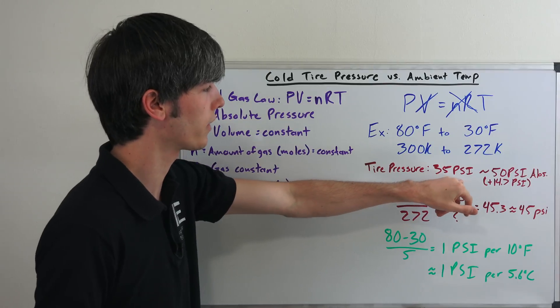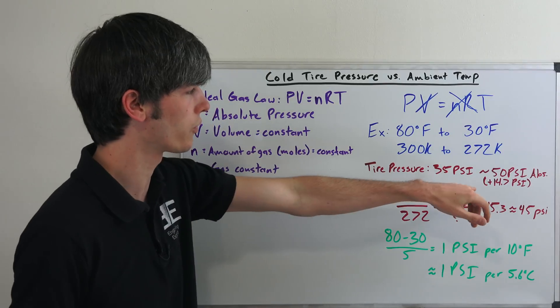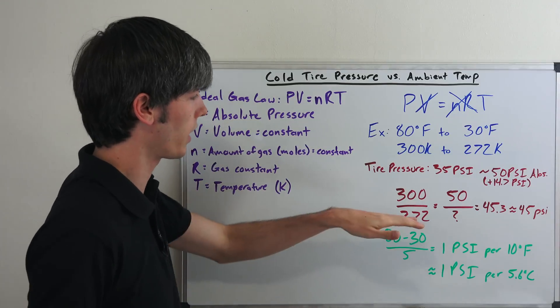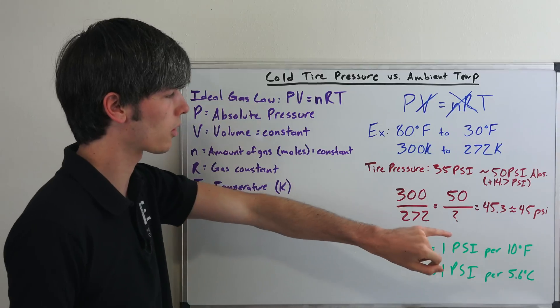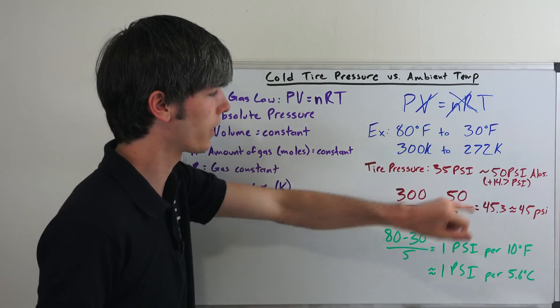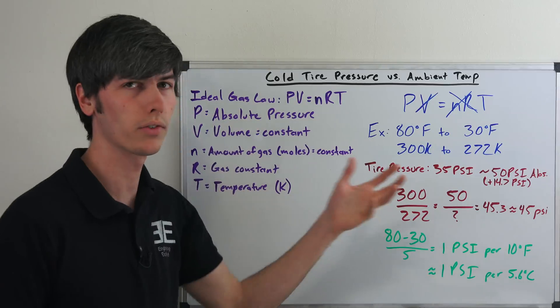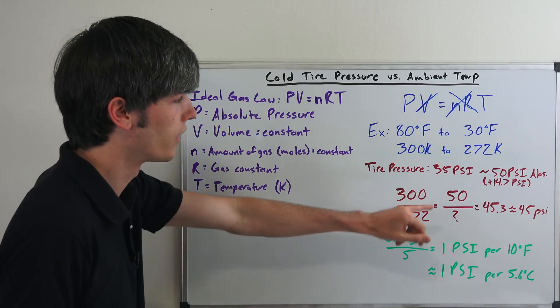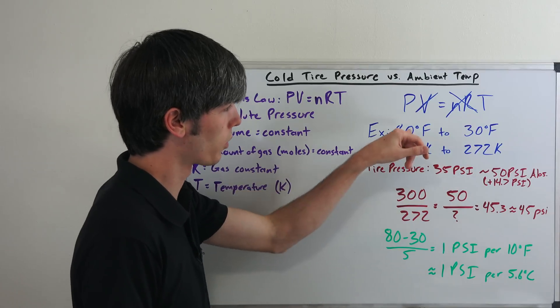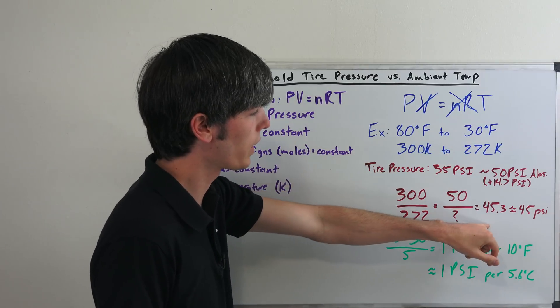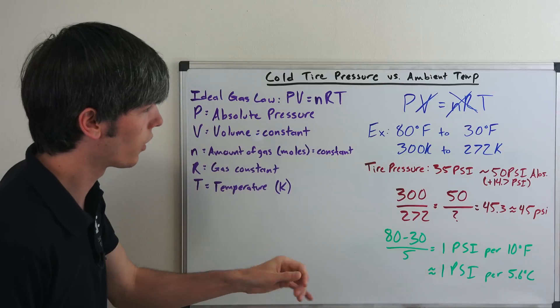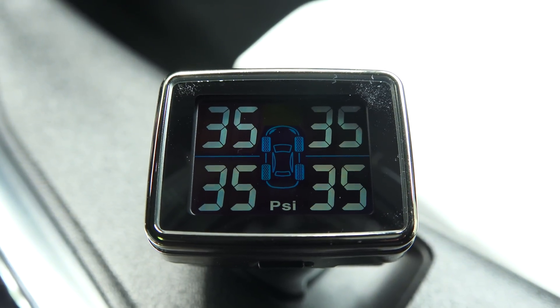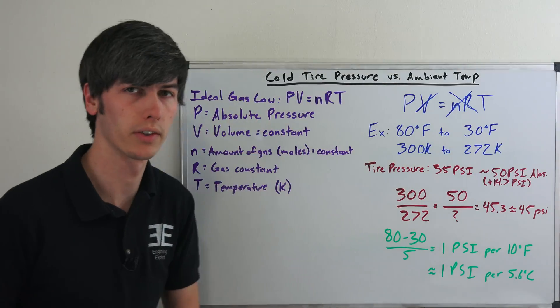So, our tire pressure, we're going to say it's at 35 psi. Now, we have to add ambient pressure to that, which is 14.7 psi. So, we're just going to say about 50 absolute psi inside the tire. So, now we have a very simple equation, 300 over 272, this over this, is equivalent to 50 over what? So, what's our pressure drop going to be? Well, that gives us 45.3 or about 45 psi. So, as you can see with a 50 degree drop in Fahrenheit, we have a 5 degree drop in psi. So, for every 10 degrees, we have 1 psi. Now, if you want this information in Celsius, it's just going to be 1 psi for every 5.6 degrees Celsius change.